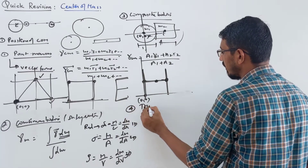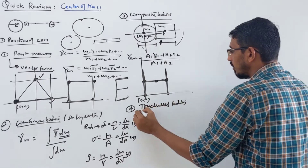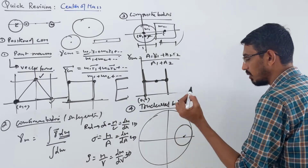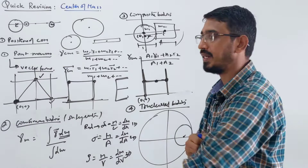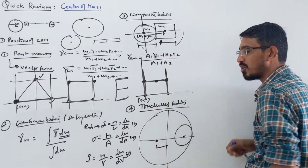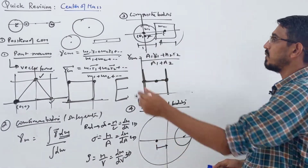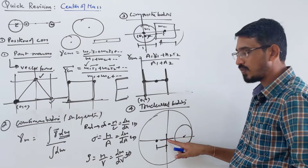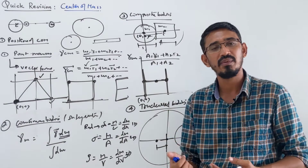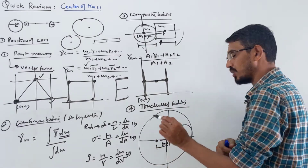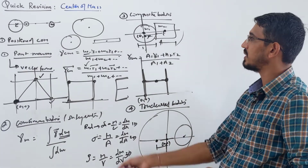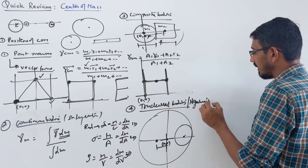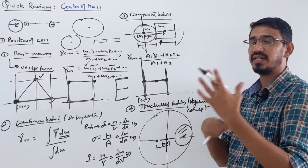The fourth type of question involves a truncated body — one part of a body is cut and removed, and we need to find the new position of the center of mass. For example, a big disc is given and a small part is cut and removed — the center of mass will shift toward the heavier side. This uses the negative mass concept: the part which is cut and removed is treated as having negative mass in the formula.